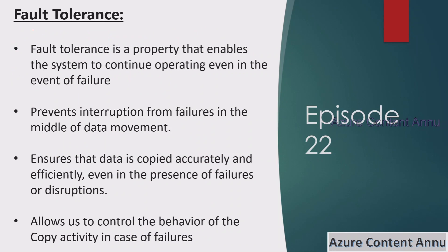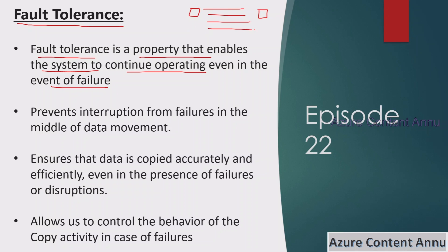Let's first understand what fault tolerance means in general. Fault tolerance is a property that enables the system to continue operating even in the event of failure. Suppose we have some data movement going on between source and sink — lots of records getting copied. If there is some bad data which should not be copied to the sink, what generally happens is that as soon as any bad data is detected, the system identifies it and completely aborts the operation, stopping the copy activity and resulting in failure.